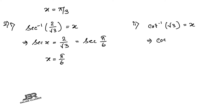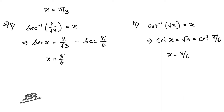Number 2.2: cot⁻¹(√3) = x, so cot x = √3. Note: cot, not cos. Since cot(π/6) = √3 (i.e., 30°), therefore x = π/6.